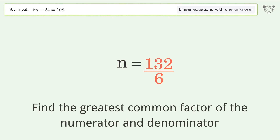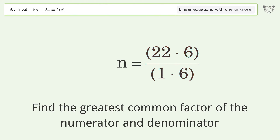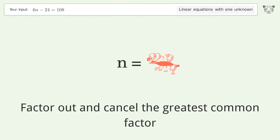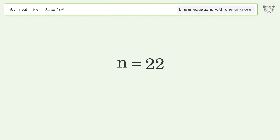Find the greatest common factor of the numerator and denominator. Factor out and cancel the greatest common factor. And so the final result is n equals 22.